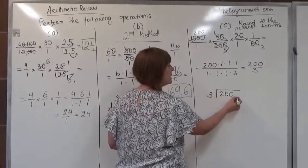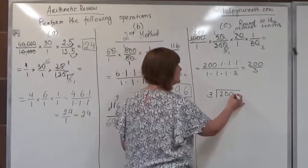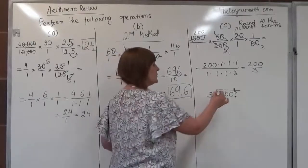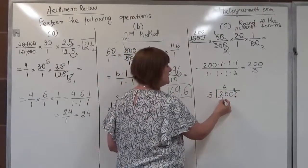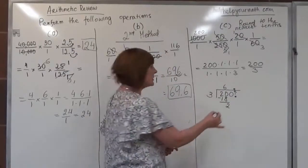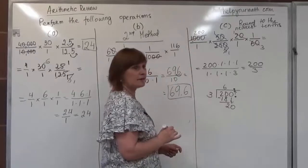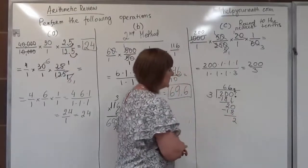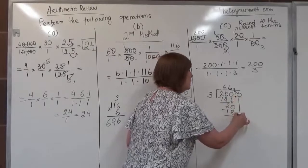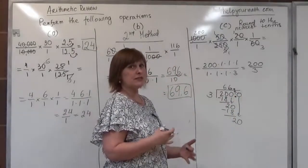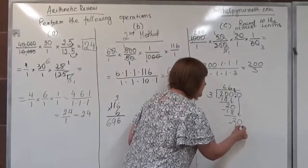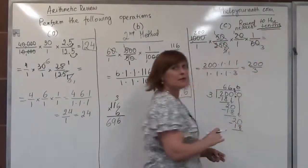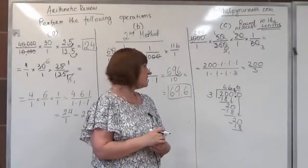200 divided by 3: we drop a decimal point at the end of the whole number and line up the decimal in the quotient. 3 fits into 20 six times; 6 times 3 is 18, subtract to get 2. Bring down the next 0 — again we have 20, so 3 fits 6 times again; minus 18 gives 2. We can see we already have a repeating decimal. Since we need to round to the nearest tenth, we need to keep dividing to one more place — the hundredths place.